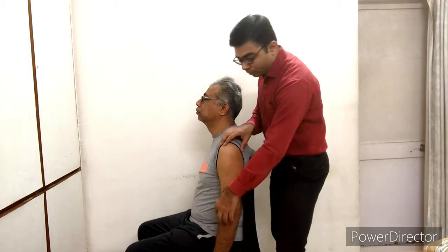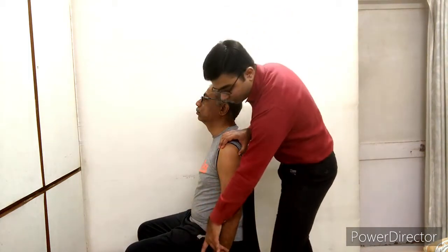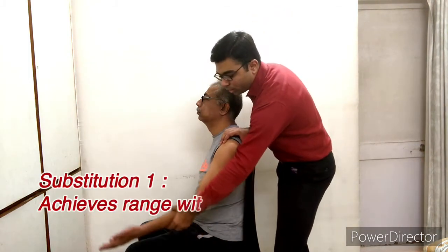Now comes the topic of substitutions. What happens is there are three main substitutions — because of certain conditions, other muscles become overactive and may give us a false interpretation of the test. Let me show you these three main substitutions.